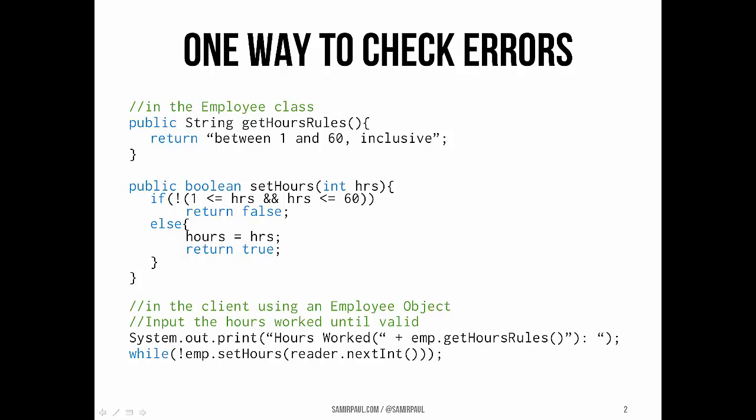On top of that, the class could provide a method, and that method could return a string — a string that basically states a rule telling us how that setter should be used properly. As an example, take a look at the code for these two methods in an employee object, and then we'll take a look at how you would actually use this code in a client class.